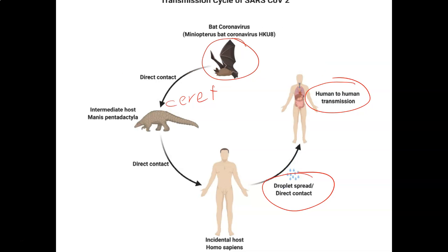The way a bat coronavirus becomes a human virus that can attack human cells is that it mutates. When humans come in close contact with animals — and this happens a lot with livestock, like people who work on turkey farms, chicken farms, and hog farms — they have more chances of coming into contact with the mucus membranes of these animals.